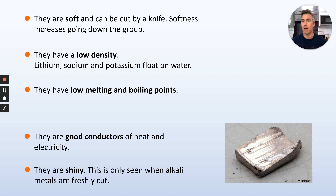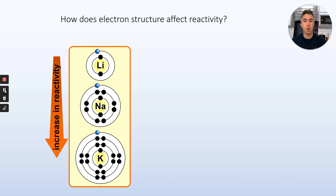So: soft, low density, low melting and boiling points, good conductors of heat and electricity, and shiny — but only when freshly cut. Over time they start to tarnish, which means they react with the air and get a coating on the outside. We know they're in group 1, so they must have one electron in their outer shell. They all have one electron in their outer shell, so they all behave in the same way because it's that outer electron and what it does that guides the reactivity of the element.